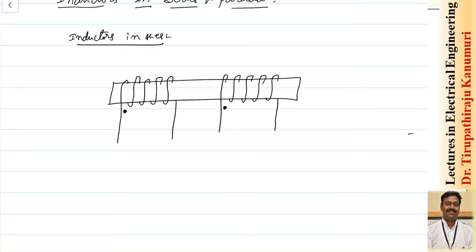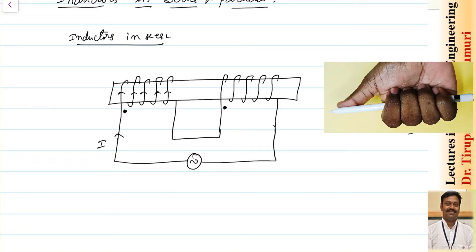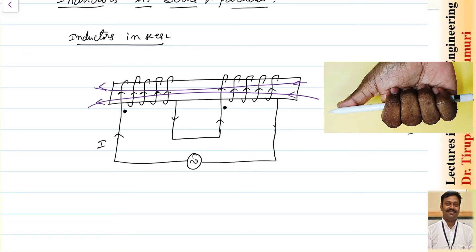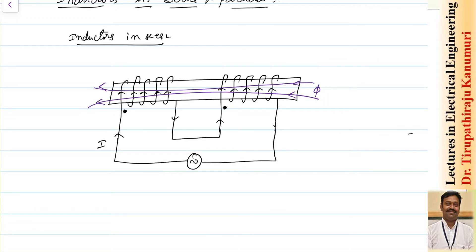Let's take the case where mutual inductance is positive — the coils are connected so that current enters the dot of both coils. I am connecting these coils and applying some voltage, so current i passes through them. The same current passes through both coils. Applying the right-hand thumb rule, the curled fingers indicate the direction of current and the thumb indicates the direction of the magnetic field. The magnetic field direction will be the same for both coils.